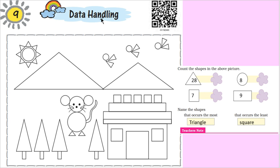But for class one, an easy way to introduce data handling is pictorial form. We are taking a picture from your book, and with the help of this, we are explaining data handling.